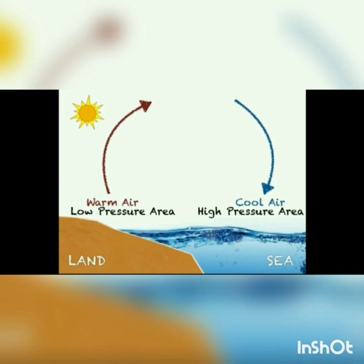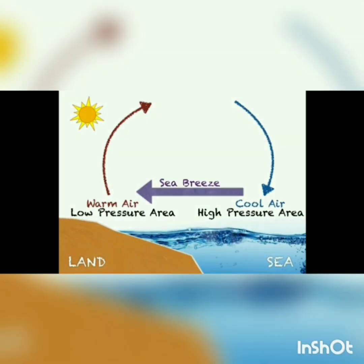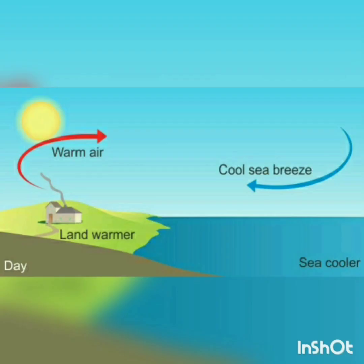Low pressure exists over the land as the warm air is leaving that space, and across the sea there is an area of high pressure. Since we have high pressure air over the sea and low pressure air over the land, the rule is: high pressure air always moves towards low pressure air. And now we have a movement in air — the cold air from the sea starts blowing towards the land, giving rise to sea breeze.